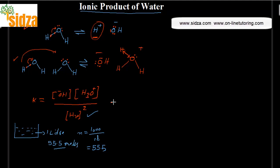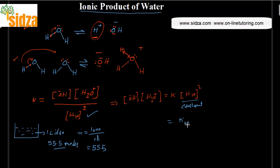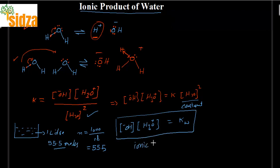Rearranging the equilibrium expression: the concentration of OH⁻ times the concentration of H₃O⁺ equals K times the concentration of water squared. Since the water concentration remains essentially constant, we combine them into a new constant called the dissociation constant or ionic product of water, Kw = [OH⁻][H⁺].